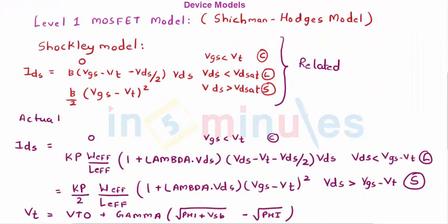So here we go and understand the level 1 model which is also known as Hitchman Hodges model. This model is very closely related to the Shockley model which I have already put up on the screen. This is the equation of ID in the cutoff linear and saturation region which we have already studied. So level 1 MOSFET model is closely related to this.